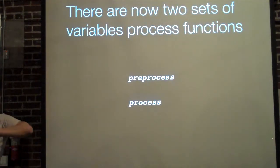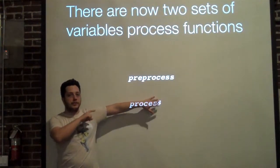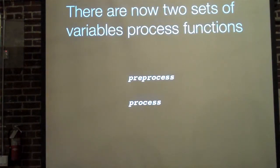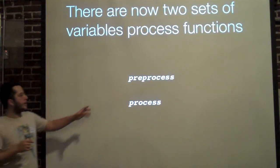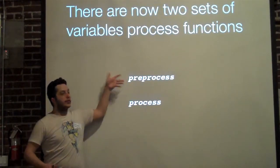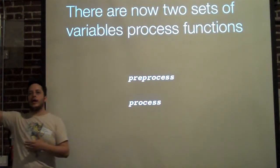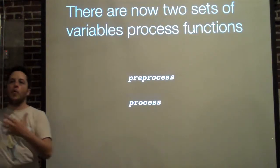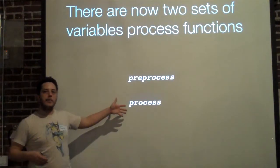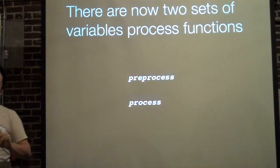There are now two sets of variable processing functions. A lot of experienced themers know about preprocess functions, which allow you to affect things with code before they're sent to render — you can tweak variables and markup. Now there is also a process stream of functions that fires after the preprocess functions. So if a module keeps doing what you don't want it to do, you now have a second phase where you can step in and change that variable after preprocess.